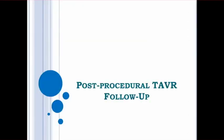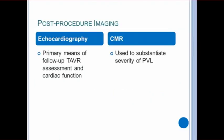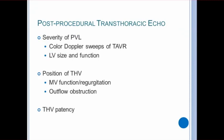Moving on to the follow-up TAVR interrogation. Echo is the primary means of follow-up TAVR assessment and cardiac function. CMR can also be utilized to confirm the severity of paravalvular leaks. Follow-up imaging is similar to procedural imaging where it's important to perform sweeps across the valve with color Doppler to determine the number and severity of paravalvular leaks. If the left ventricle has increased in size or decreased in function, it can be a sign that there are significant paravalvular leaks that may need to be treated. Also, performing serial echos to interrogate the patency of the valve is important because over time, like any other prosthesis, it can become stenotic and lead to additional treatment. Finally, because these patients typically have small, fixed, and stiff hearts, it's important to look for effusions because even small effusions are poorly tolerated.